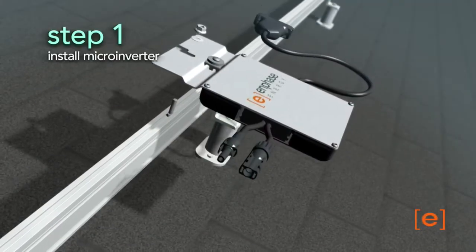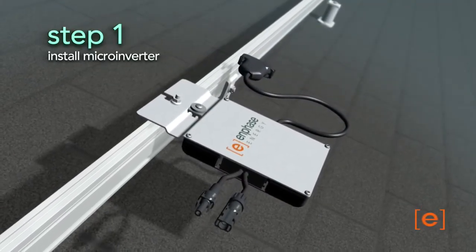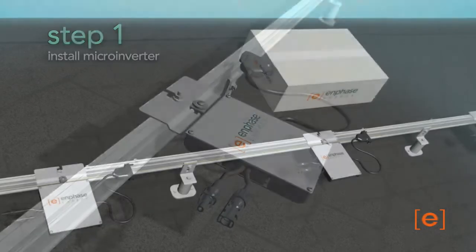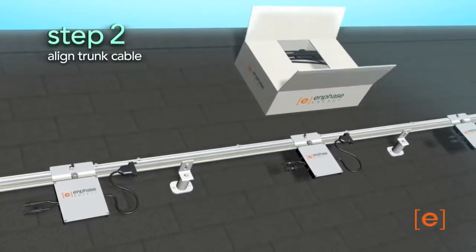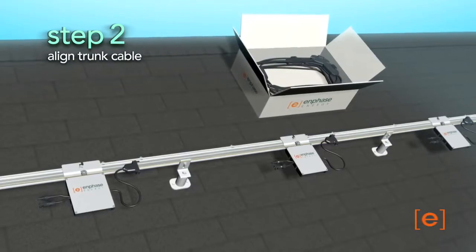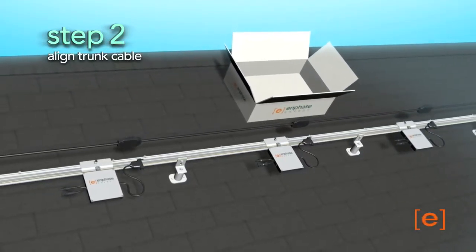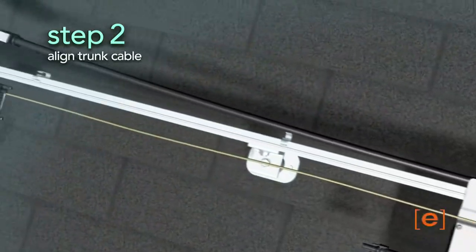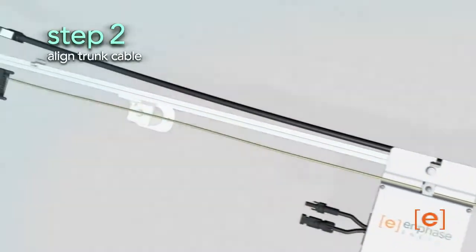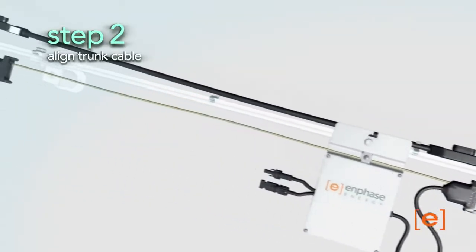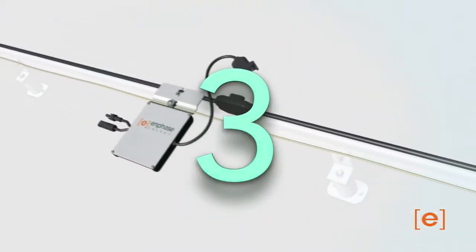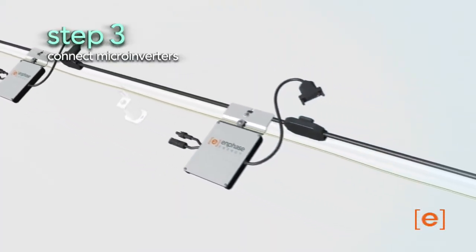First, install the microinverters in the appropriate locations on the racking. Next, lay out the trunk cable in the location required, with the trunk connectors aligned to the location of the microinverters. The cable can be placed on either side of the racking and may be secured with tie wraps or clips. Now connect the microinverters to the trunk cable.